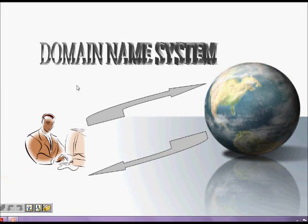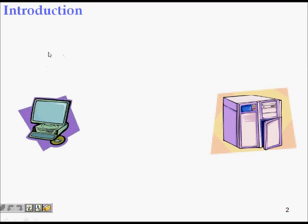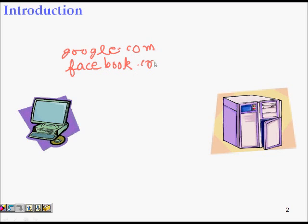In this lecture we will learn about the Domain Name System. Humans have a tendency to remember names much easier than numbers. So it's much easier to remember google.com or facebook.com than their IP addresses, like 152.67.32.8 or 132.65.15.9. These numbers are difficult to remember.